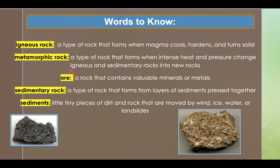The next word to listen for is ore — a rock that contains valuable minerals or metals. An example: iron ore is one of the most important types of ore in the world. The next word is sedimentary rock — a type of rock that forms from layers of sediments pressed together. An example: coal is a type of sedimentary rock used as an energy source.